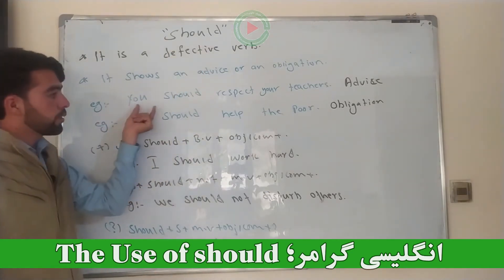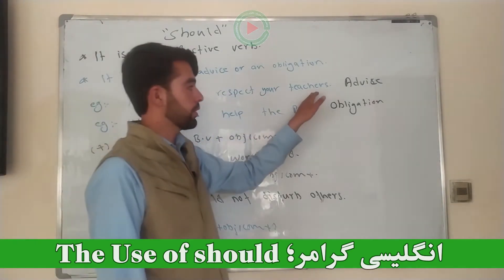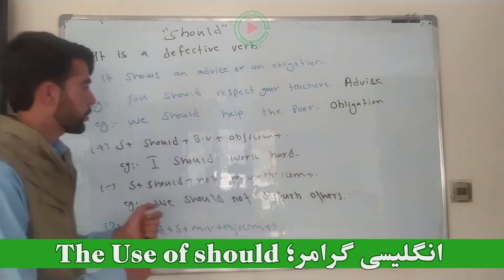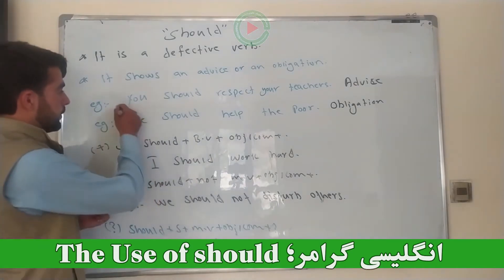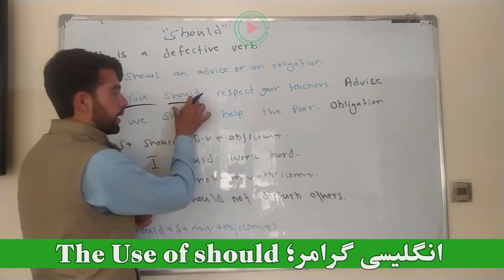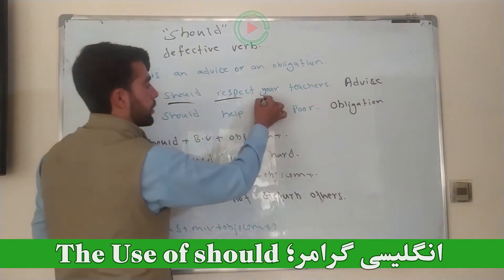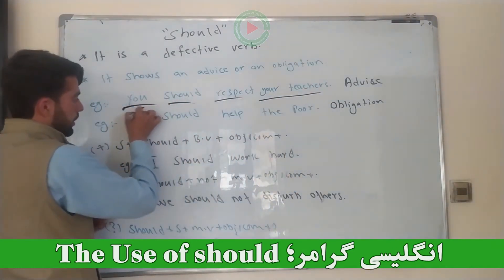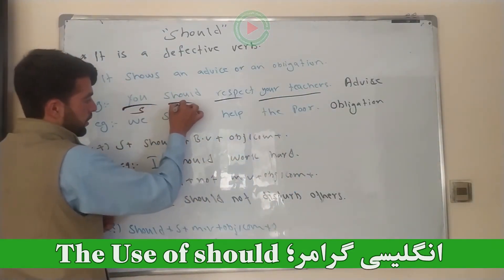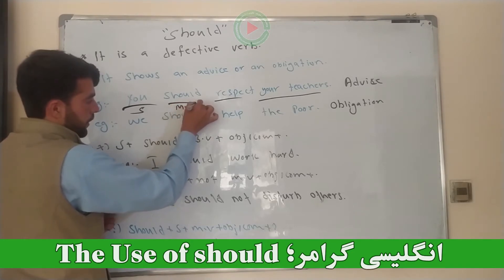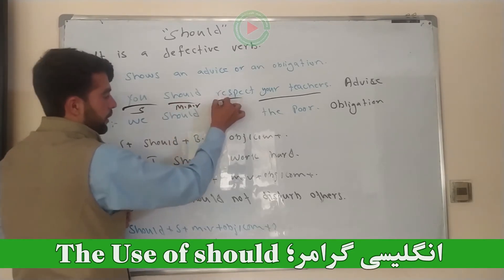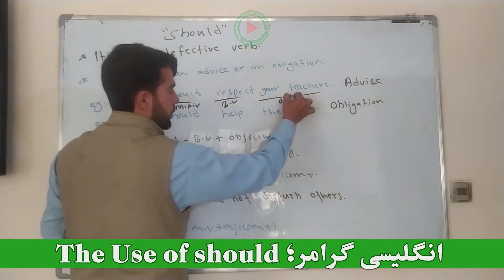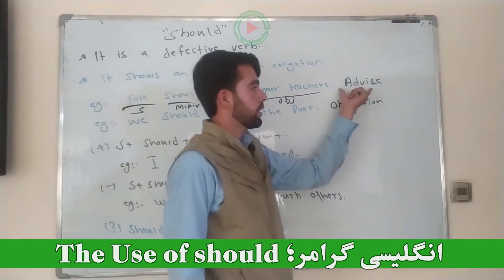For example: 'You should respect your teachers.' Here, 'you' is the subject, 'should' is the modal auxiliary verb, 'respect' is the base form of the verb, and 'your teachers' is the object.